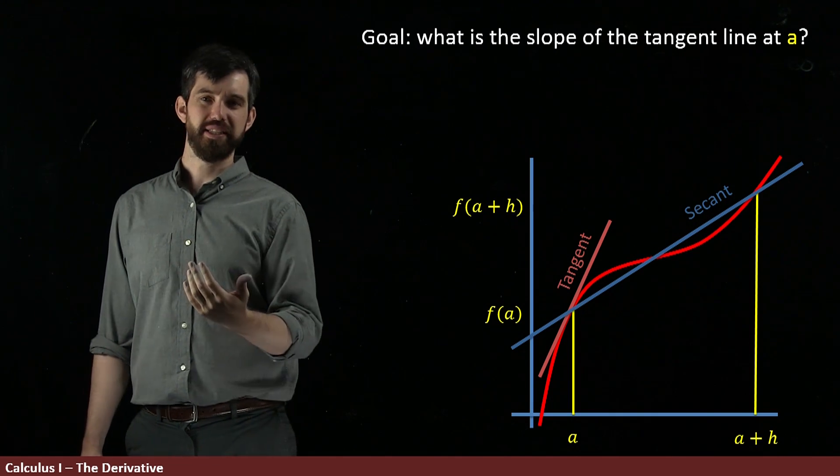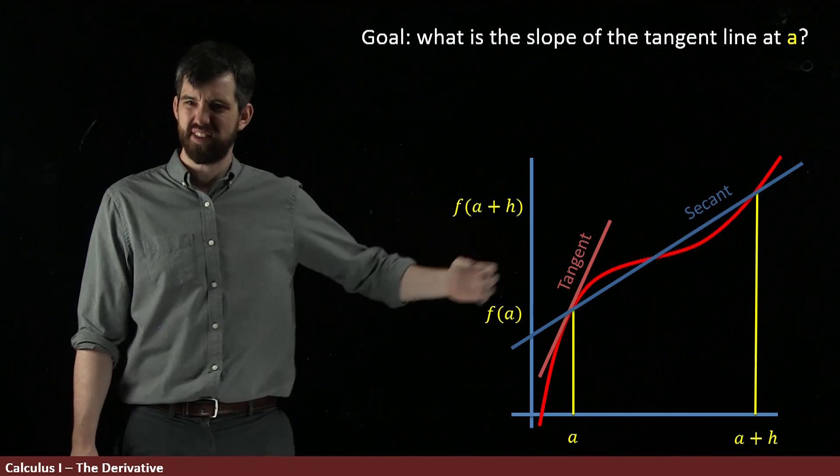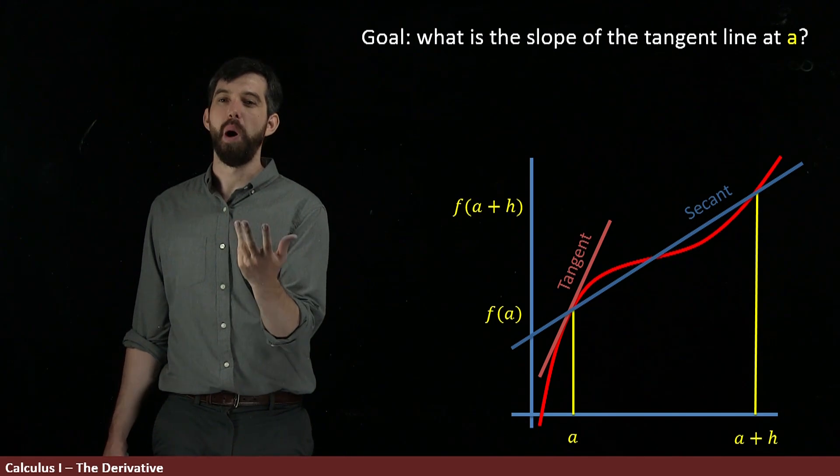And you'll recall that secant lines are a line that connects two points on a curve. Now, the big idea is this. I've drawn them far away with a big value of h. So they don't look like the same line.